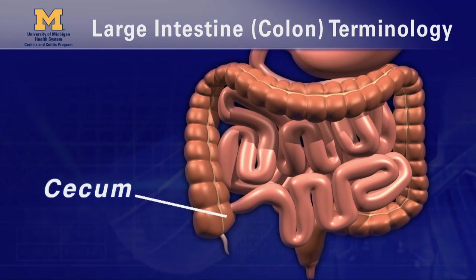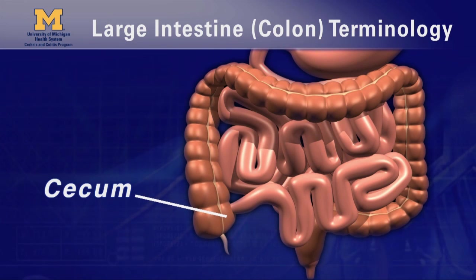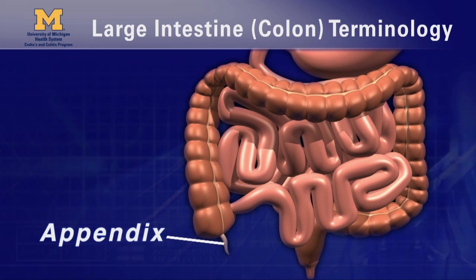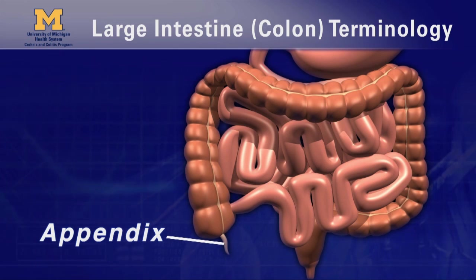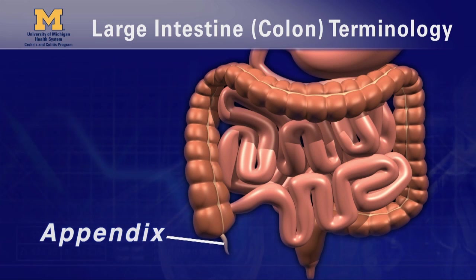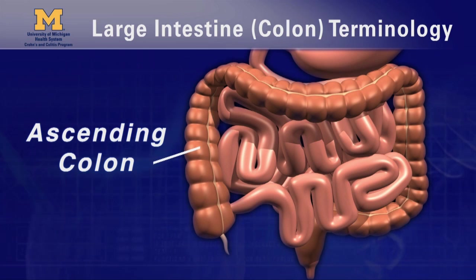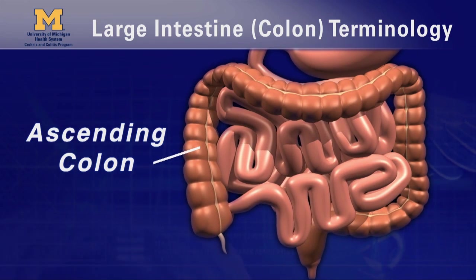The first part of the colon is called the cecum. It's a pouch that receives contents from the small intestine, absorbs fluids and salts, and adds mucus. This is where the appendix is located. The next three sections of the colon are shaped like an upside-down U. The ascending colon, or right colon, starts at the bottom right-hand side of the abdomen and ascends upwards towards the liver.